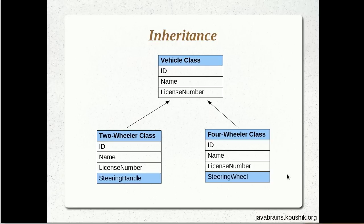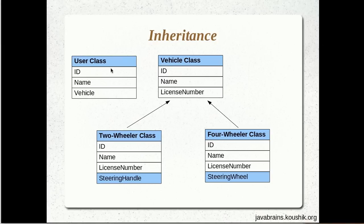But there are a couple of problems. Since we're talking about inheritance, the coolest feature of inheritance provided by Java is polymorphism. Say I have a user object with a reference to a vehicle class, and I want to dynamically assign either a two-wheeler or a four-wheeler to it. This vehicle reference is a placeholder for both, and I wouldn't know until runtime what it's going to be.